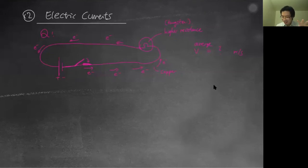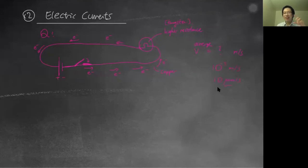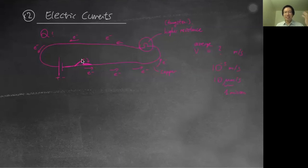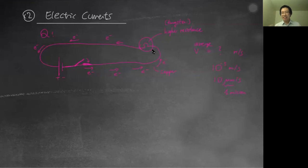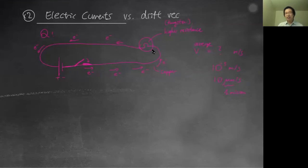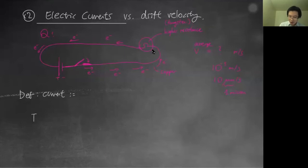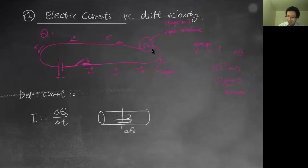Many would guess something like the speed of light — 10^8 m/s. But it's actually extremely slow: around 10^-5 meters per second. That's about 20 micrometers per second — roughly ten hair-strand widths per second. So how does the light bulb turn on right away? That's what we need to understand. The actual velocity electrons move at is called drift velocity, and it's different from how fast the current responds.